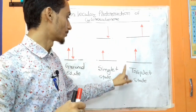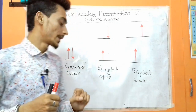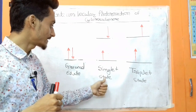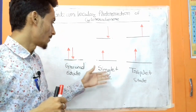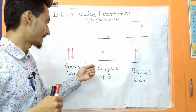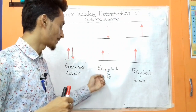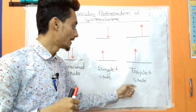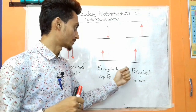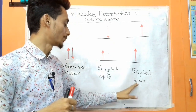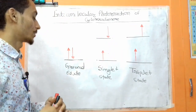The singlet state has slightly greater energy compared to the triplet state, so the singlet state is less stable than the triplet state. The triplet state is therefore very useful for photochemistry.